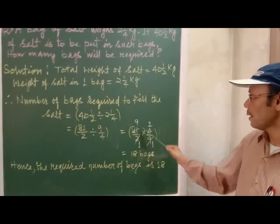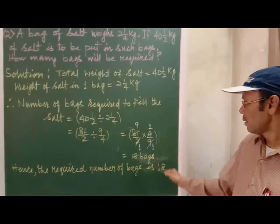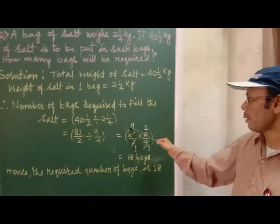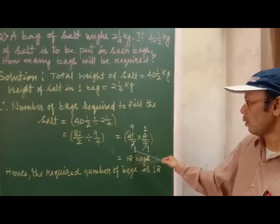So 9 1 is 9, 9 9 is 81. 2 1 is 2, 2 2 is 4. In the numerator, 9 to 18 and below is 1 into 1.